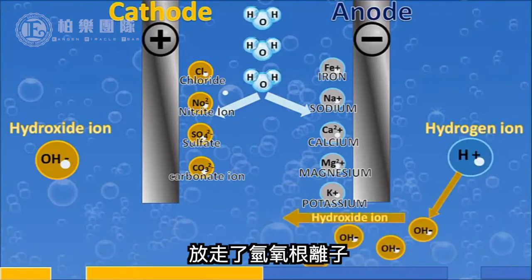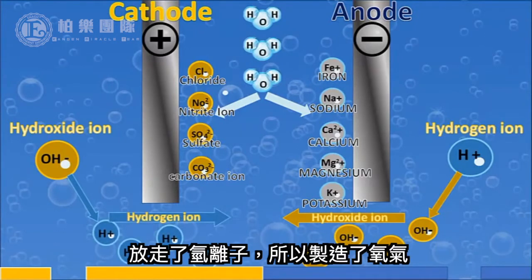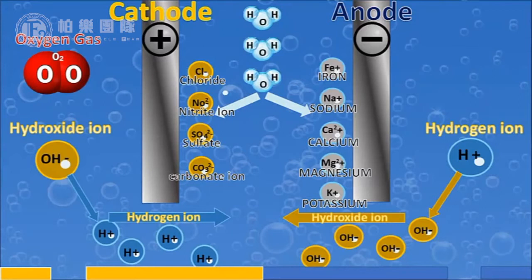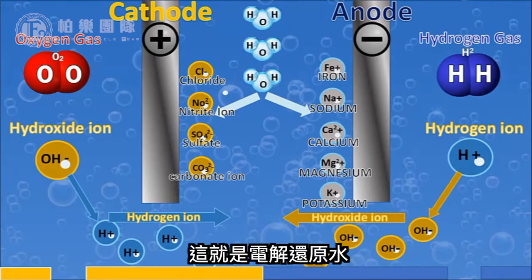We're creating a hydroxide ion, and on the other side we're creating a hydrogen ion. This happens by splitting the H2O — on this side we release the hydroxide ion with the charge, and on the other side we release the hydrogen ion. This creates oxygen gas on one side and hydrogen gas on the other.